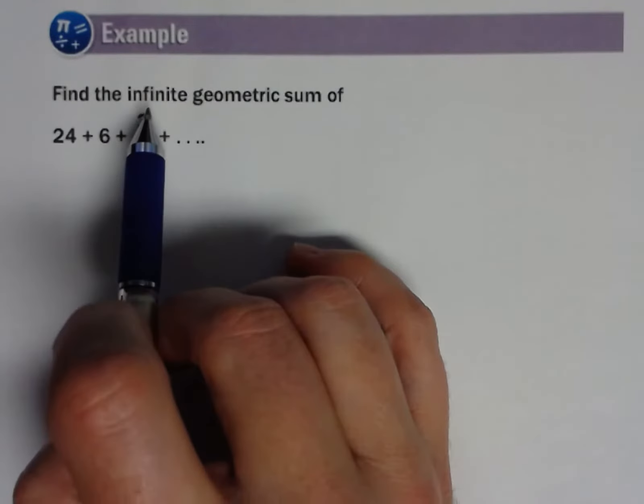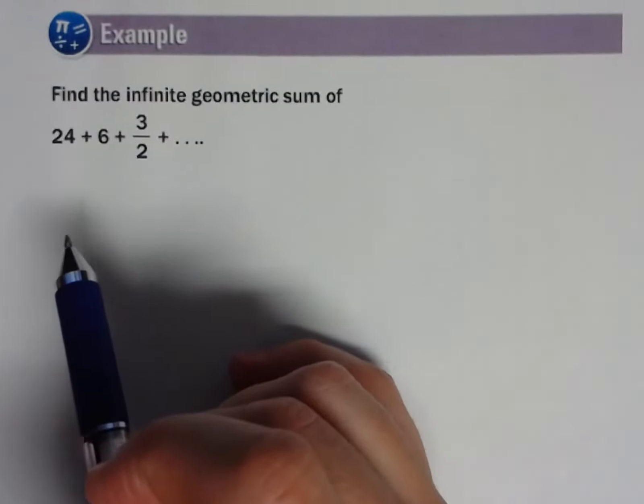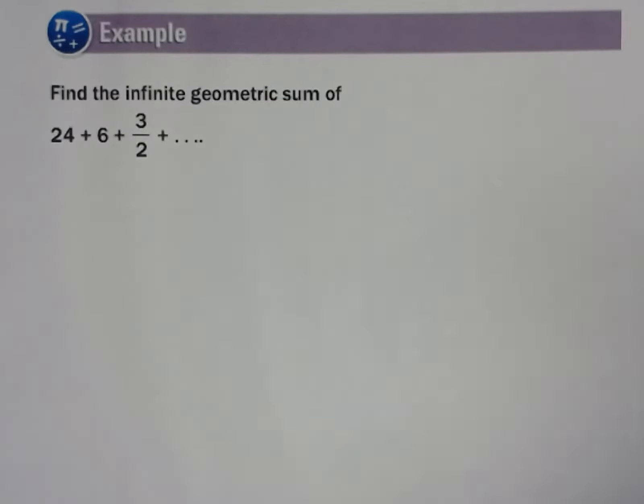We want to find the infinite geometric sum. Remember what we talked about: how can an infinite sequence have a definite sum? It's this idea of a limit. Because our ratio is a fraction, it's smaller than one. Each time we add, we're adding such a small amount eventually that it's like you're adding nothing, so we approach a definite value.